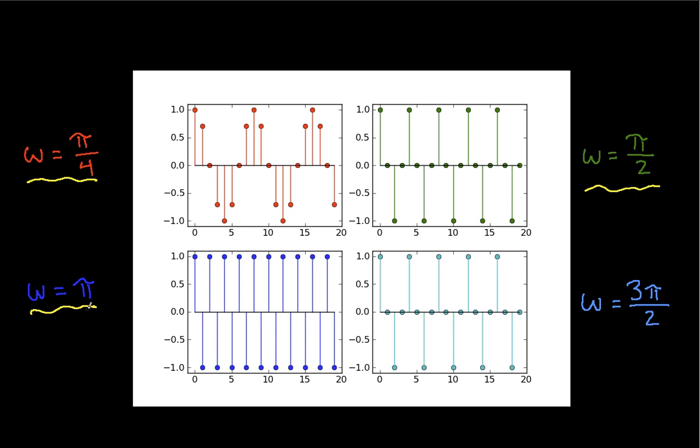And finally we make omega equal to pi, and you can see that it only takes 2 samples to go through the cosine. I basically have the cosine at plus 1, the cosine at negative 1, cosine plus 1, and so on. So again, as I make omega larger, going from pi over 4 up to pi, the waveform starts to wiggle faster.